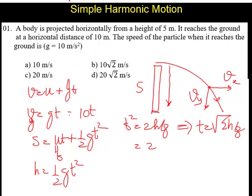Now, 2 into h in this case is 5 meters. 2 into 5 by g is taken as 10 meters, so the answer is 1. t square is square root and t is again going to be 1. Time of fall is 1.